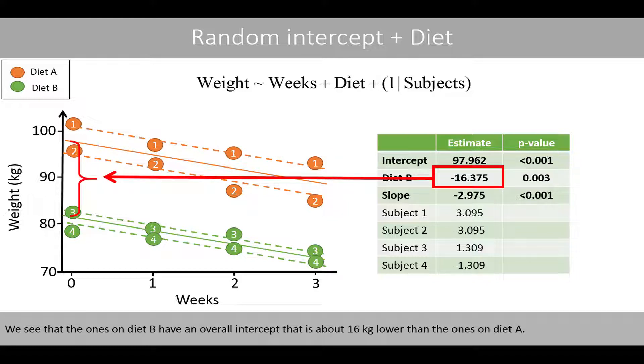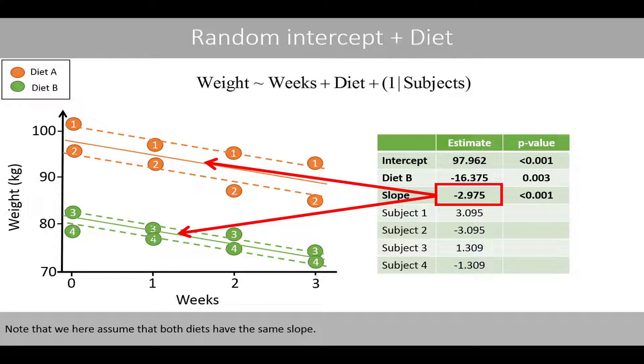We see that the ones on diet B have an overall intercept that is about 16 kilos lower than the ones on diet A. Note that we here assume that both diets have the same slope.